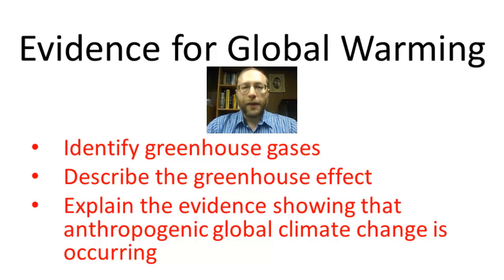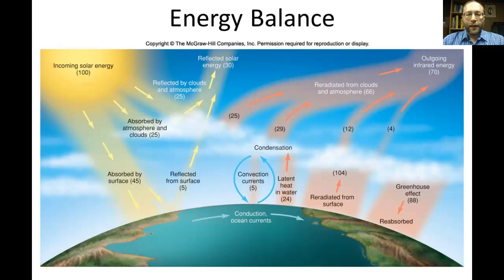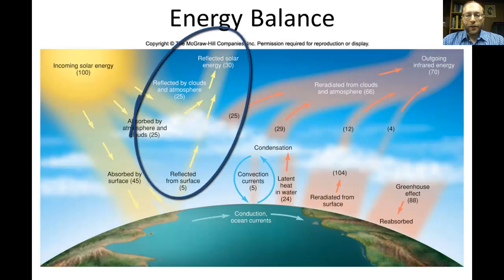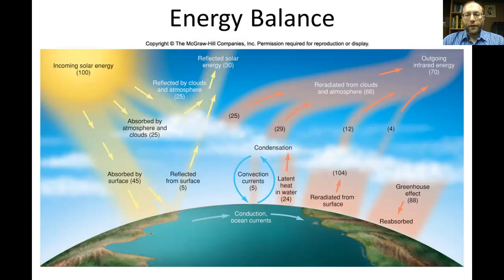Anthropogenic means that it is caused by people and that it is not naturally caused. First, we'll look at this diagram. This diagram shows the energy balance of insolation, which is incoming solar radiation. We see that some of it gets absorbed by the surface of the Earth, and some of it gets reflected back into outer space. The amount reflected depends on the albedo of the surface. If it's very bright and reflective, then very little of the insolation will be absorbed; if it's very dark, then a lot of it will be absorbed and very little reflected.